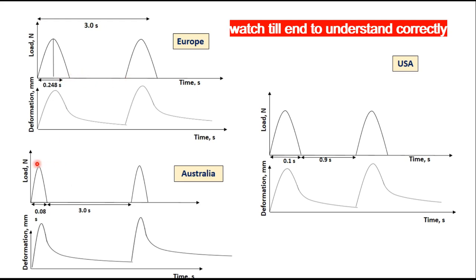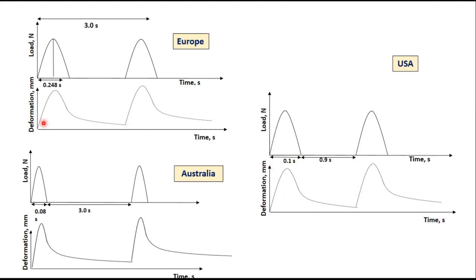In Australian conditions, the load application is only 0.08 second whereas the pulse repetition is again 3 seconds. In the US method, the load is applied for 0.1 second and the rest period is 0.9 second. In all three methods, the deformation chart is more or less similar: there is maximum deformation during load application and then it reduces during the rest period.